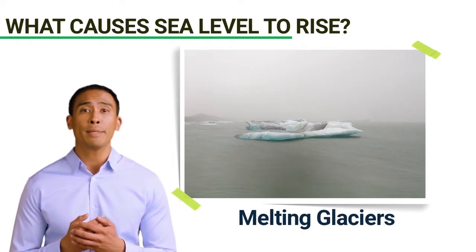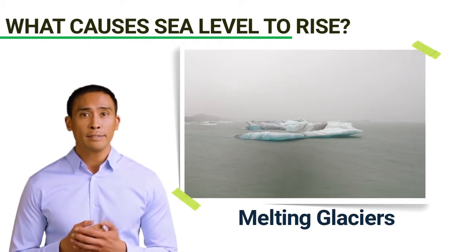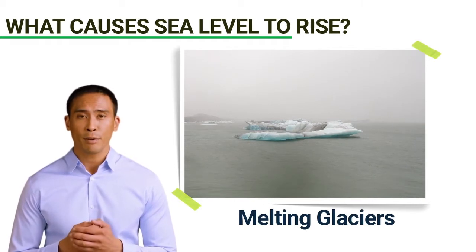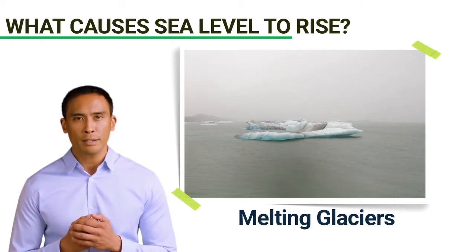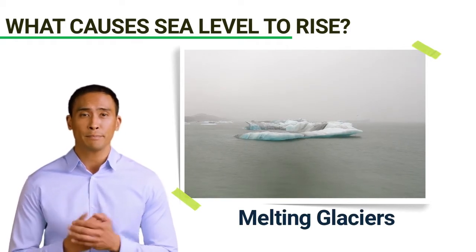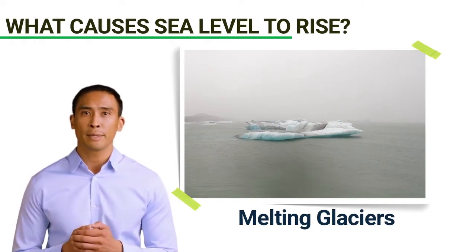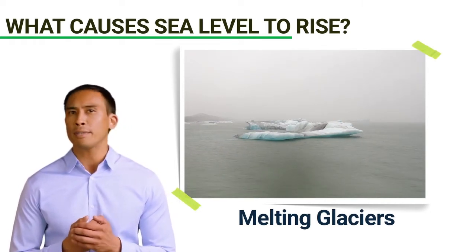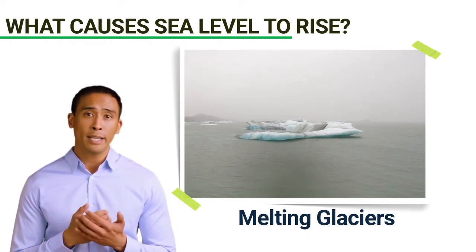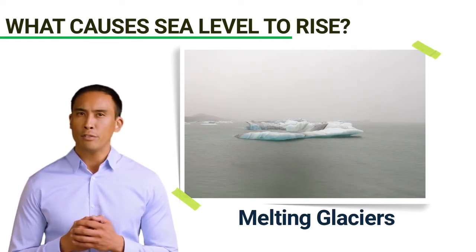First, melting glaciers. A glacier is a large body of ice formed over a long period of time — it can take up to 100 years for a glacier to form. The largest glacier in the world is found in Antarctica, and Greenland has the second largest ice sheet on the globe. Since temperature levels on the planet are rising, glaciers in these regions are continuously melting. When ice melts, it turns into water and flows into the ocean, increasing the volume of water and resulting in sea level rise. The high rate of sea level rise is mainly attributed to melting glaciers.